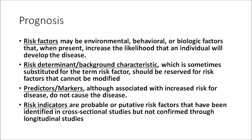A risk predictor or risk marker is associated with increased risk of disease but does not cause the disease. For example, bleeding on probing is a predictor and marker of periodontal disease — it is associated with increased risk but does not cause it. A risk indicator is a probable or putative risk factor identified in cross-sectional studies but not confirmed through longitudinal studies. For example, HIV/AIDS: cross-sectional studies show increased periodontal risk, but this has not been confirmed longitudinally.